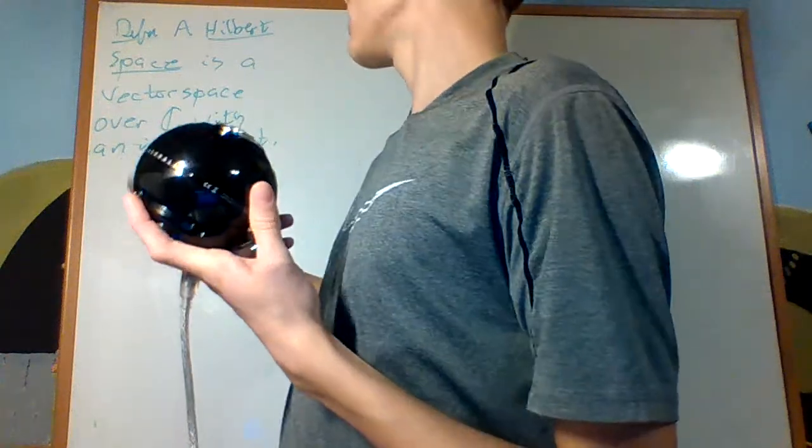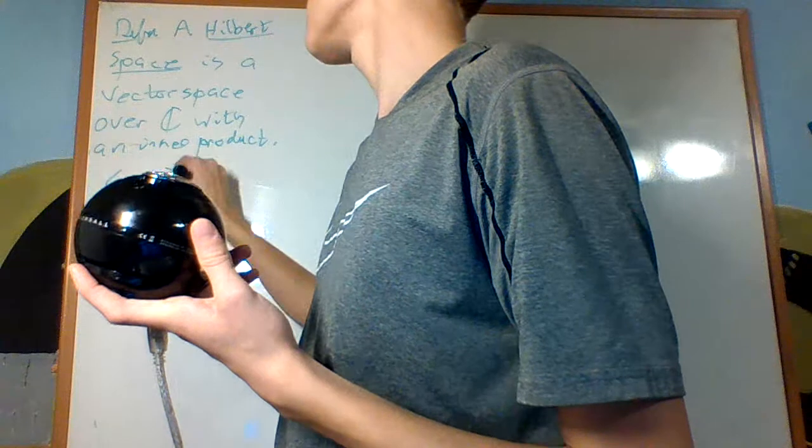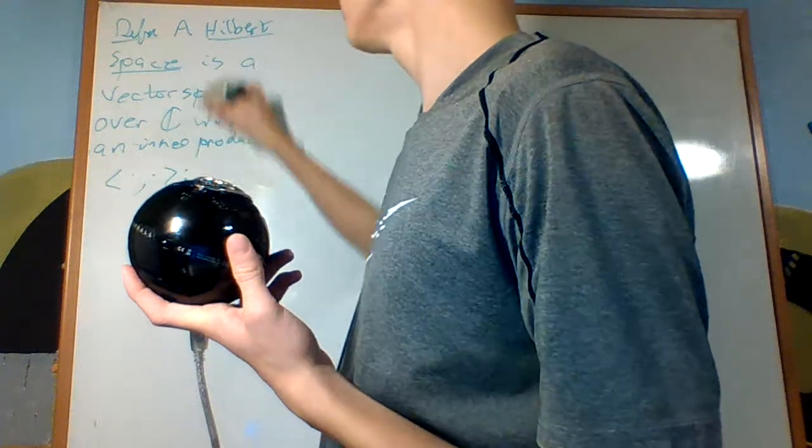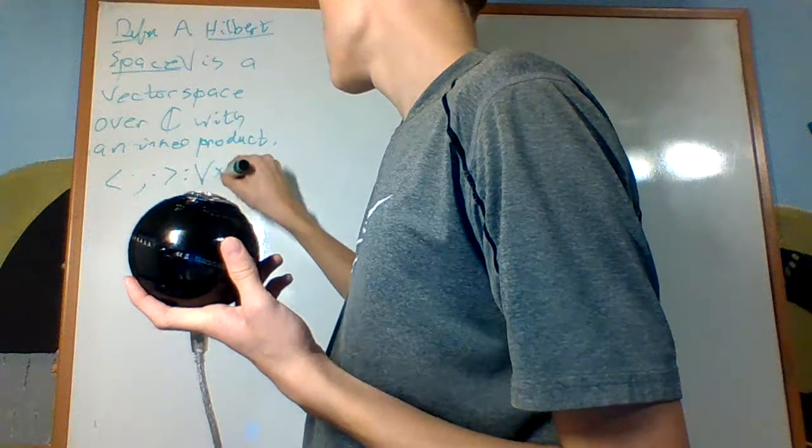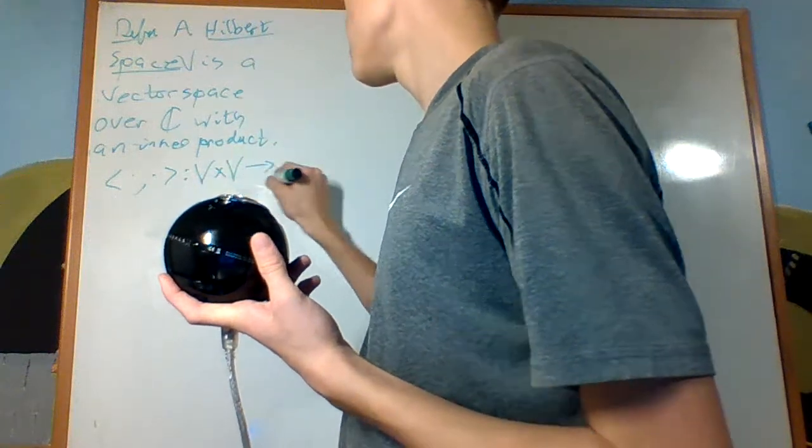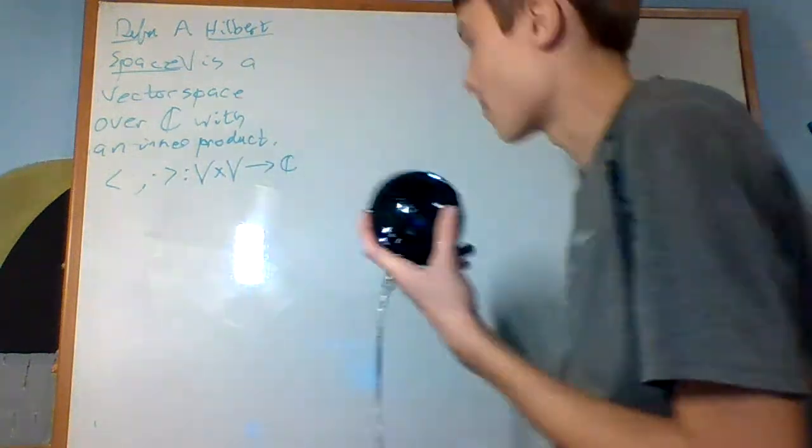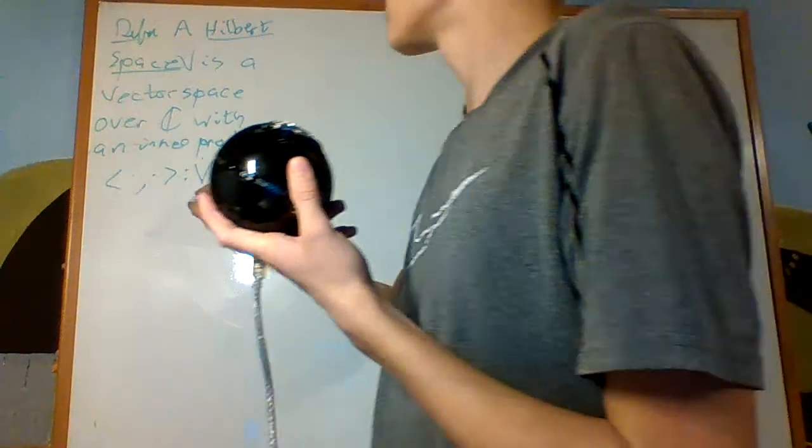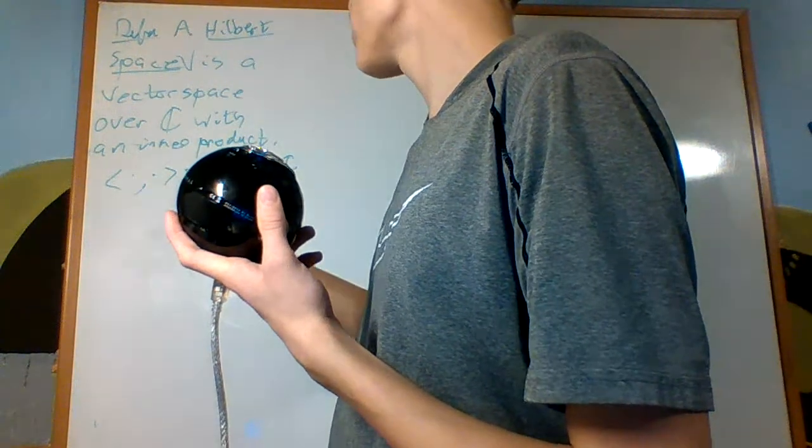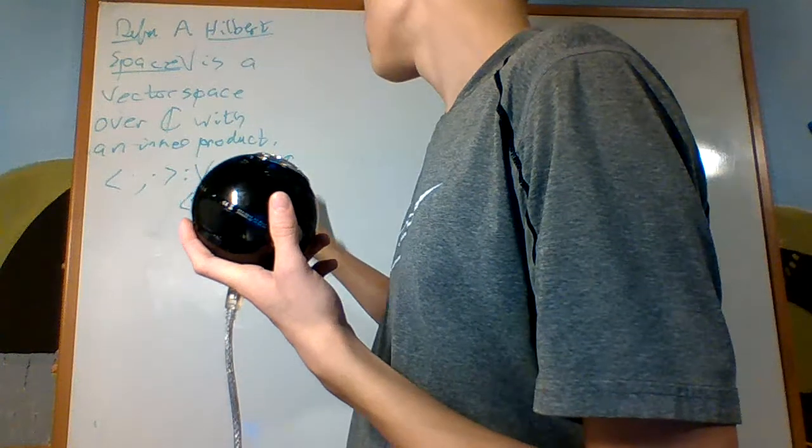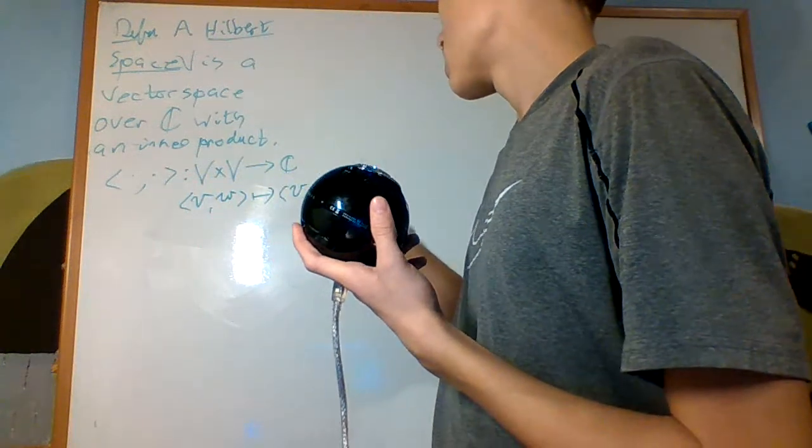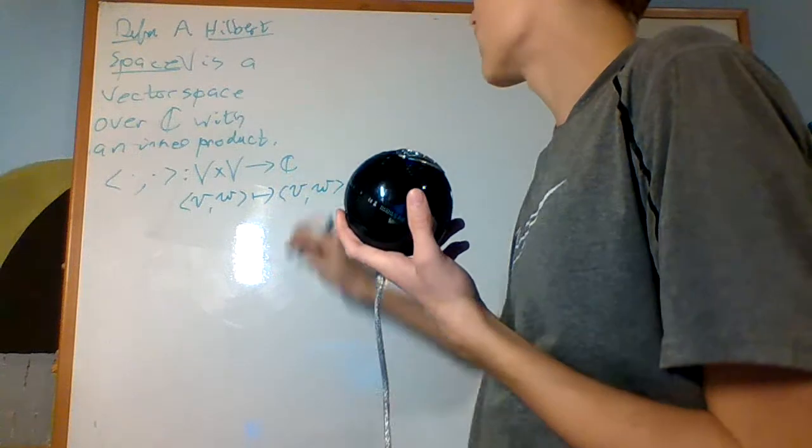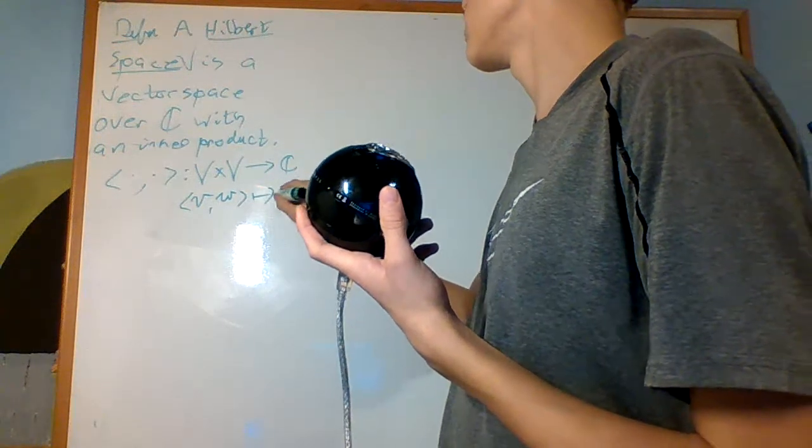I'll denote it dot, dot. That takes in two vectors - I'll call this Hilbert space V - it takes in two vectors, and outputs a complex number, and it sends the pair V, W to the inner product of the two, denoted like that.